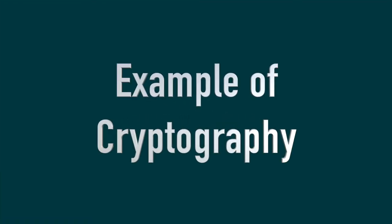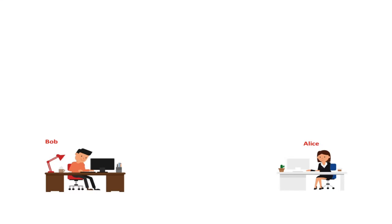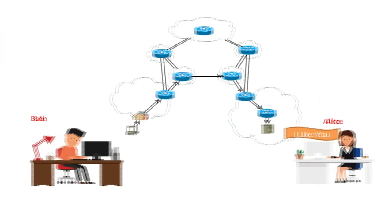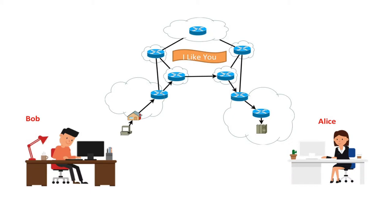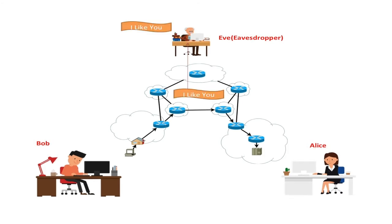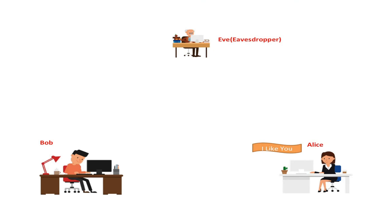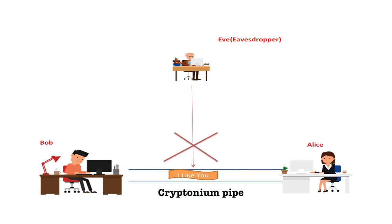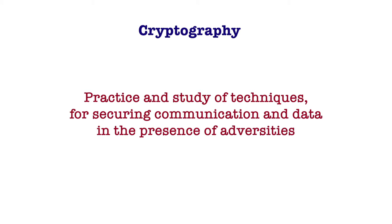Let us understand the concept with an example. Suppose there are two people, Alice and Bob, who want to pass notes back and forth. These notes are private and they are using a public forum such as the internet. Eve is interested in the private conversation between Bob and Alice and can do much more than eavesdropping — for example, Eve could change the content of the message, which could be catastrophic. The goal of cryptography is to protect this communication and make it secure. We came up with the notion of a cryptographic pipe where Alice sends messages using a secure medium, and Eve cannot read, tamper with or access these messages during transit. So we define cryptography as a practice and study of techniques for securing communication and data in the presence of adversaries.